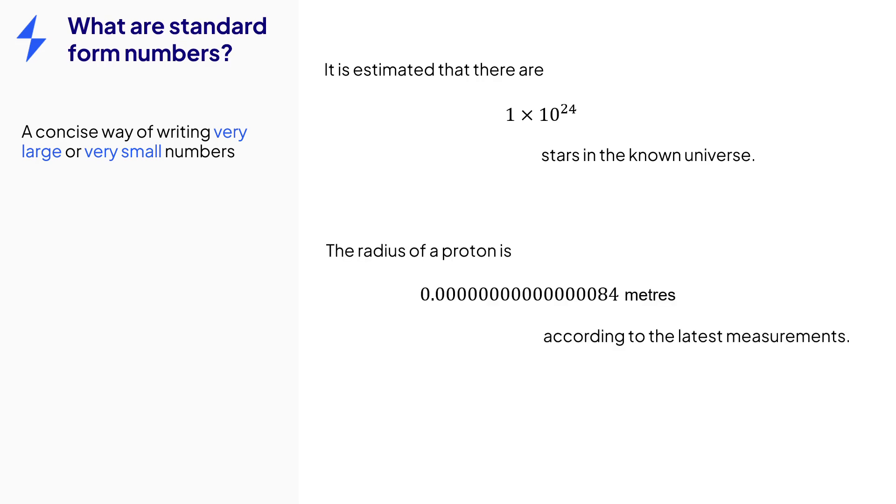Or instead of this really small number, we can say that the radius of a proton is 8.4 times 10 to the negative 16 meters, according to the latest measurements.